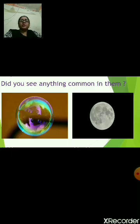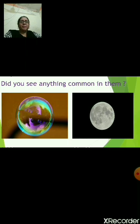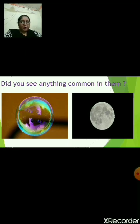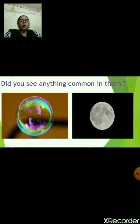Now, what do you see in the first picture, children? It is the picture of a bubble. Do you like to play with bubbles sometimes? What is the second picture about? It is the picture of a moon. Did you see anything common in them, children? Both the shapes are circular in shape, isn't it? This is the common thing between a bubble and a moon.